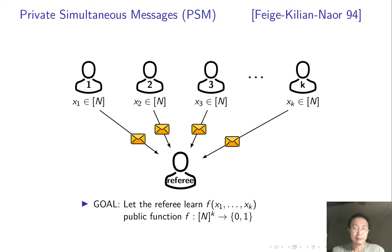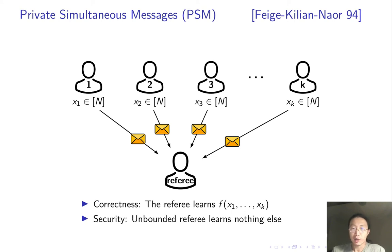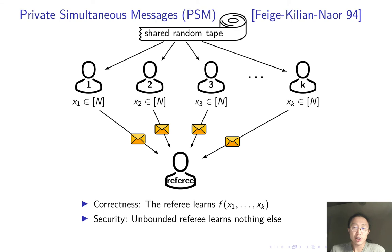For correctness, the referee learns the function output. For security, the referee should learn nothing else even if he is computationally unbounded. To make this possible, randomness is shared among parties. Of course, the randomness is hidden from the referee. For PSM, we care about communication complexity.